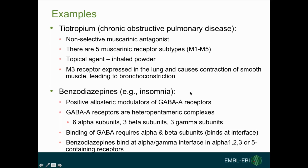Another example: benzodiazepine drugs, approved for indications including insomnia, are positive allosteric modulators of GABA-A receptors — heteropentameric complexes with different combinations of alpha, beta, and gamma subunits. There are six known alpha subunits, three beta, and three gamma subunits. Benzodiazepines bind between the alpha and gamma subunits, but only with certain alpha subunits — not alpha-4 or alpha-6. It's been shown that the alpha-1 subunit is particularly important for insomnia. How do we represent this kind of target? We could include all subunits or try to narrow down the specificity further.